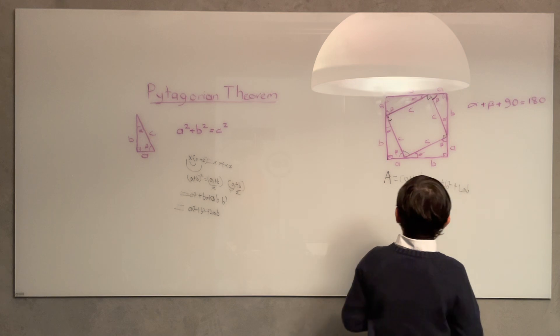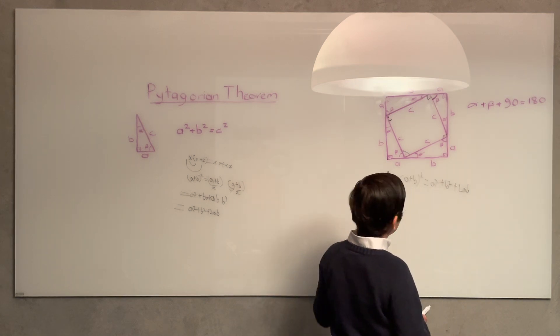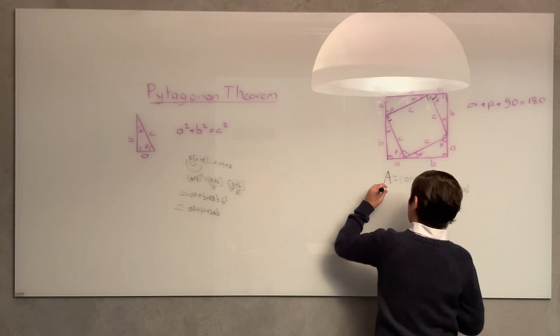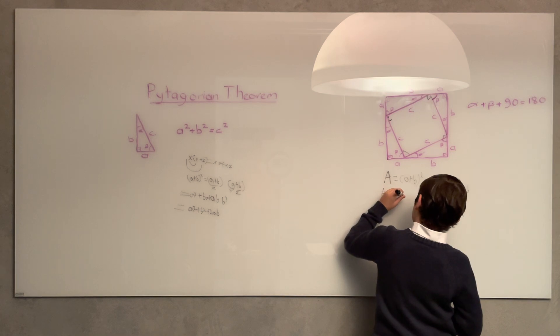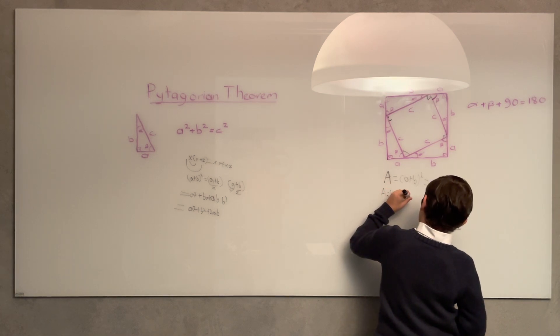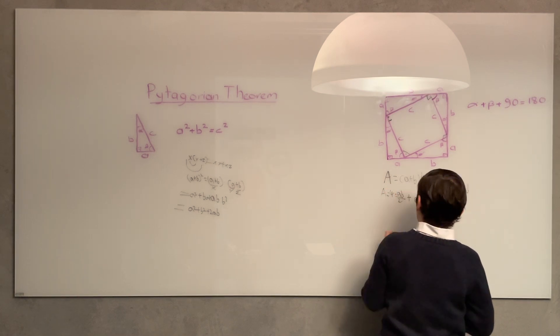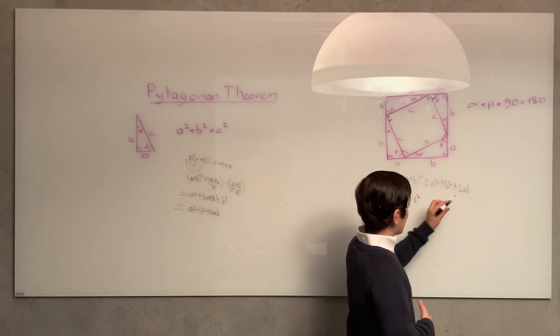Another way we can find the area is by adding all four right triangles and the smaller square. That would be 4 times (ab/2) plus c². Now, 4 times (ab/2) is the same as 2ab.